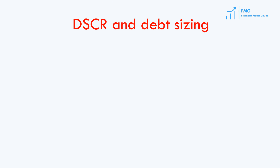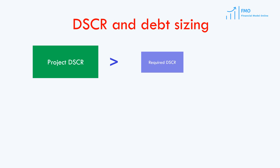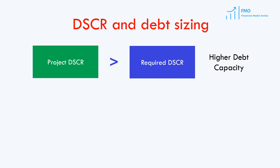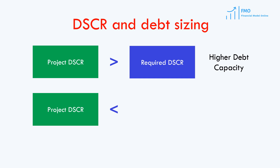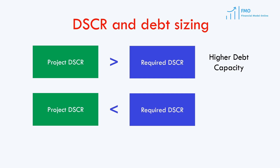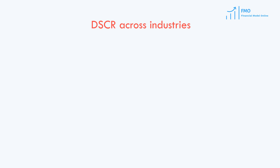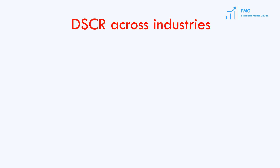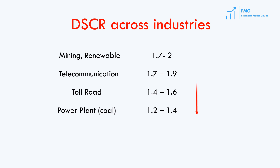When the project's DSCR is higher than the required DSCR, the project has higher debt capacity and can accommodate higher leverage. When the opposite is true and the project's DSCR is lower than the required DSCR, the project has lower debt capacity and shall reduce its leverage. The minimum required DSCR varies across industries, reflecting the riskiness of the industries and projects.